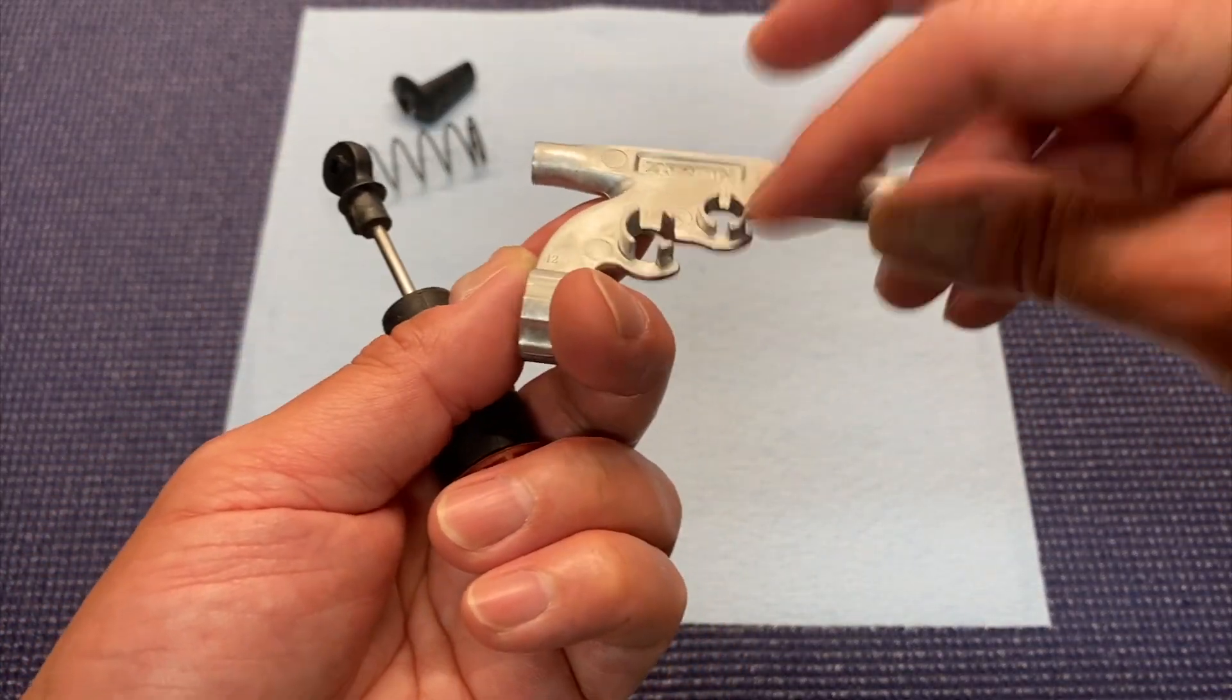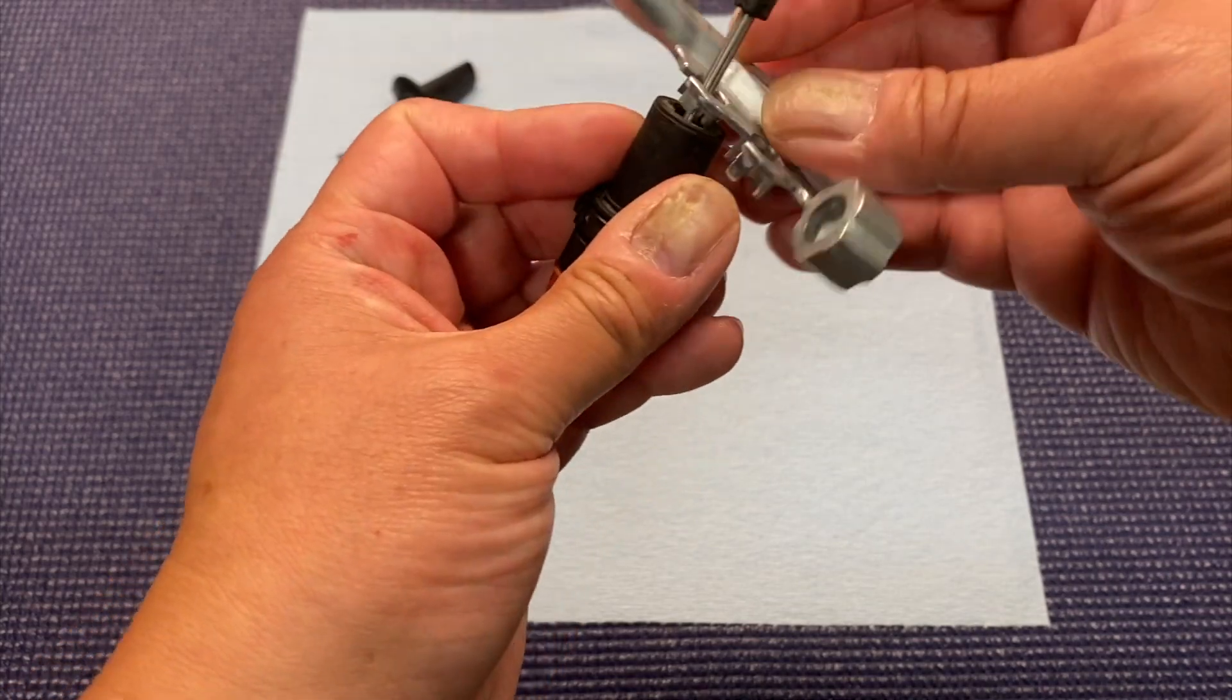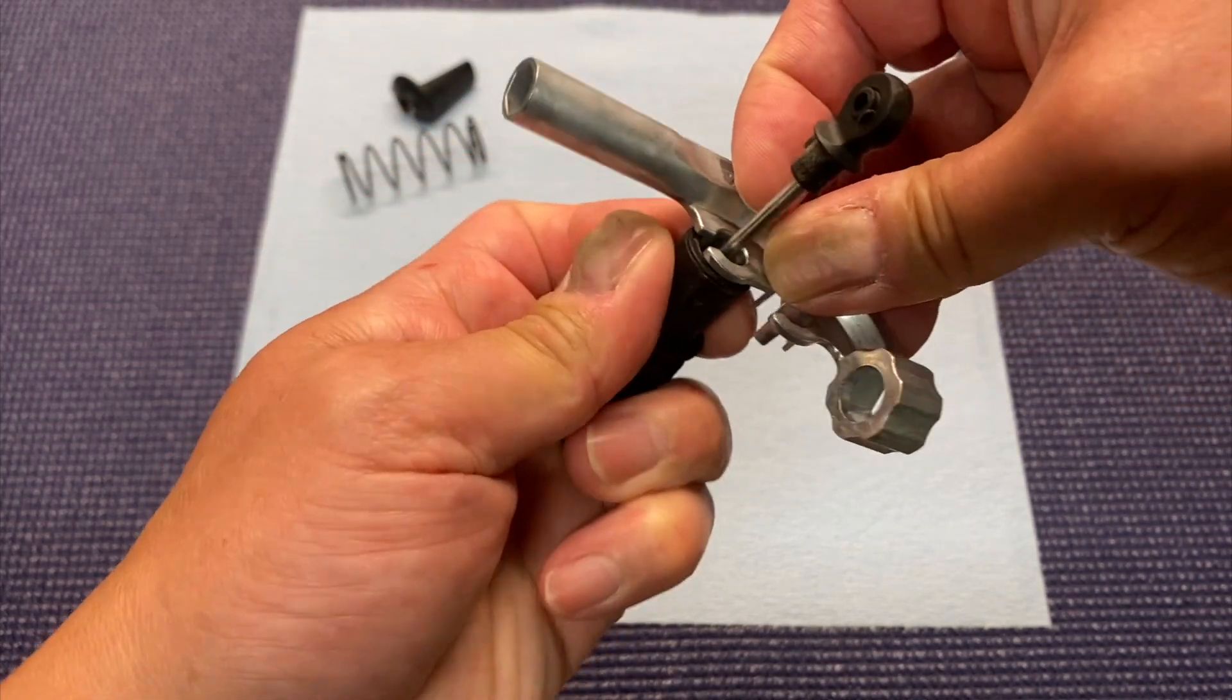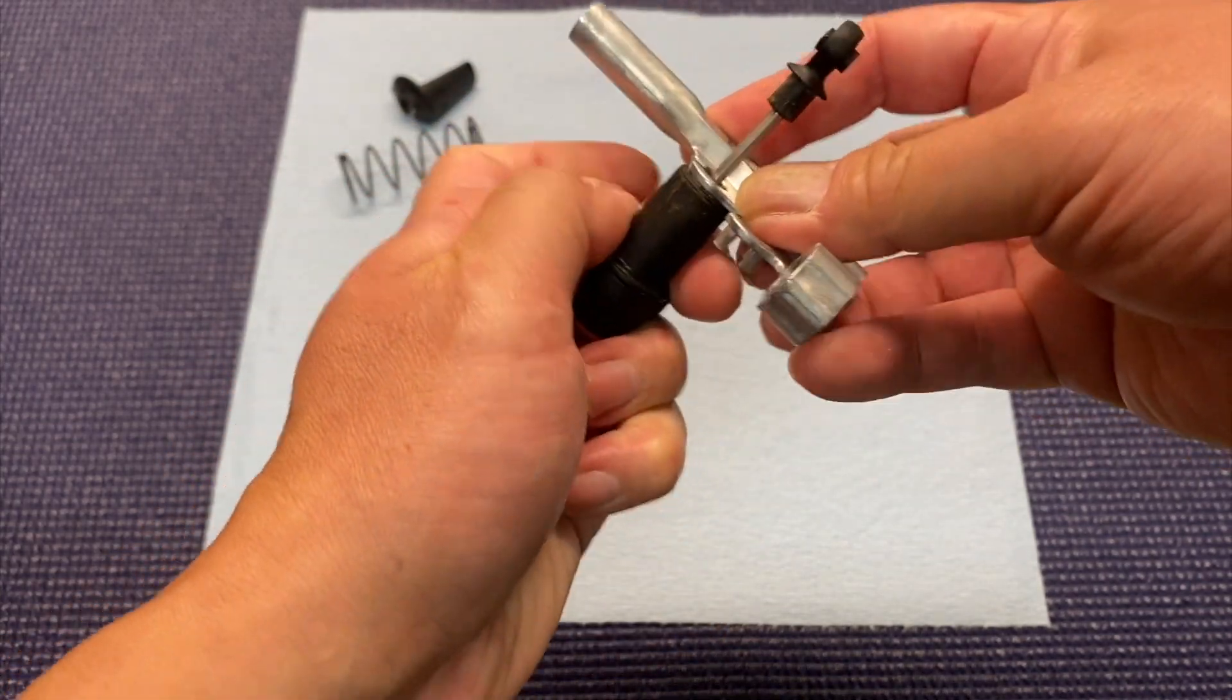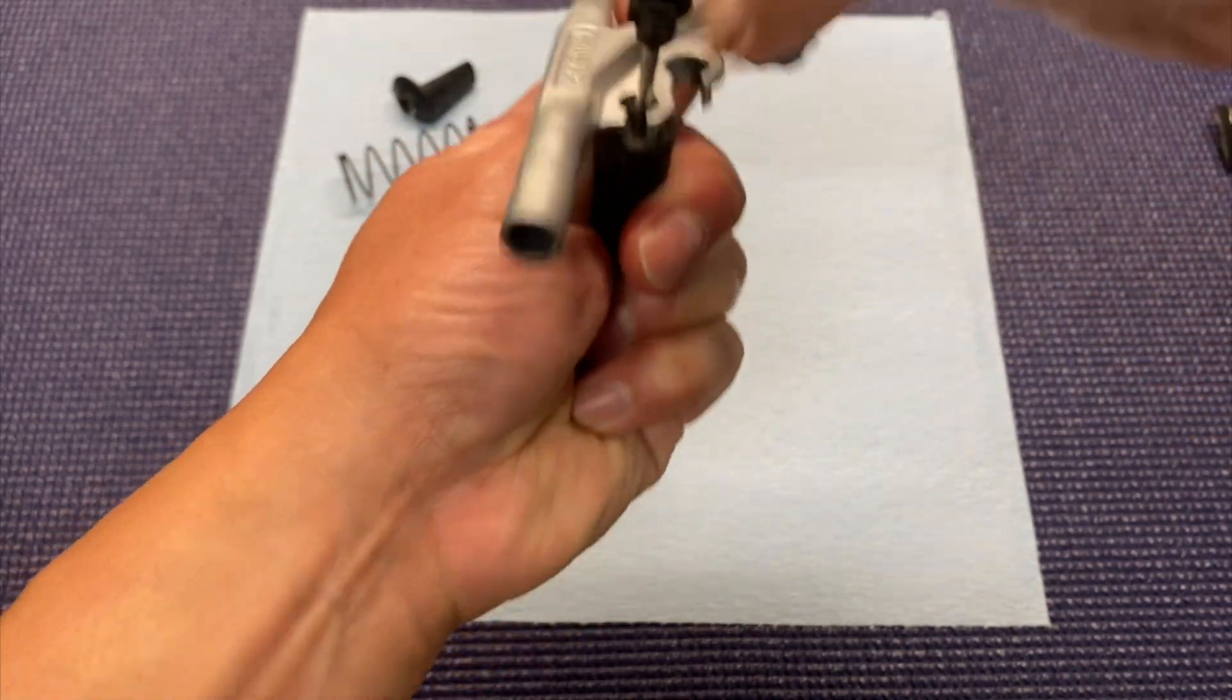So it's got two different sizes. Small pops right onto here. You just fit it right into the shock body itself, and then you just start unscrewing it.